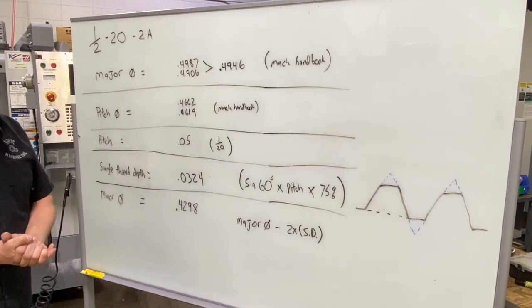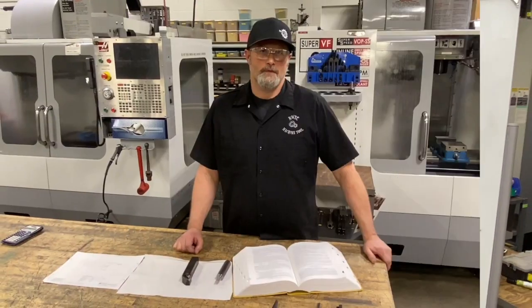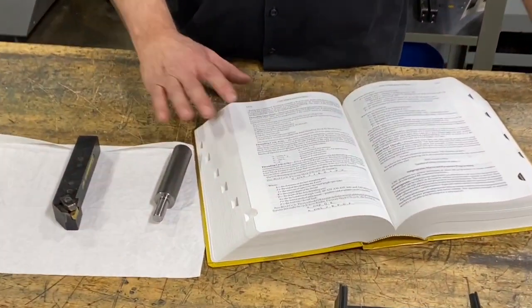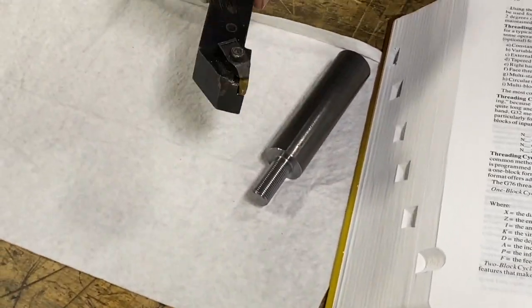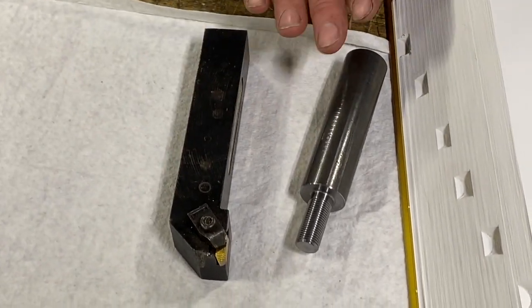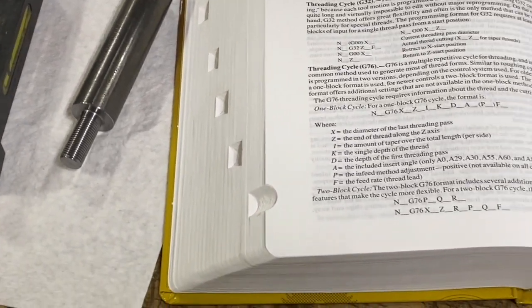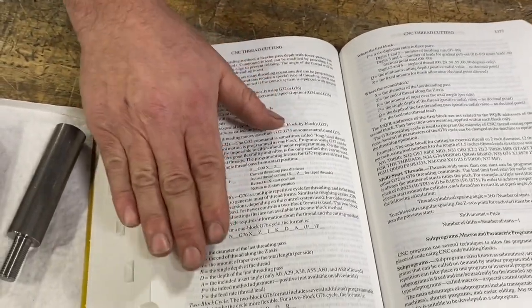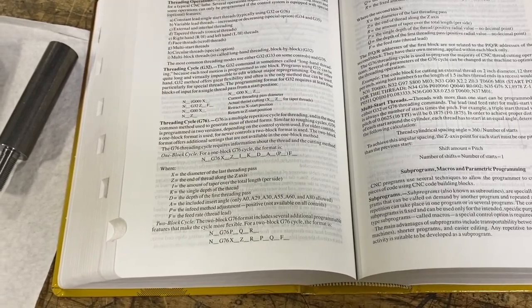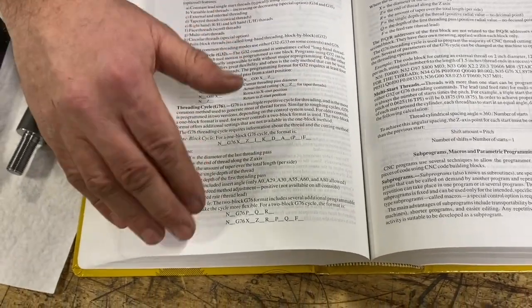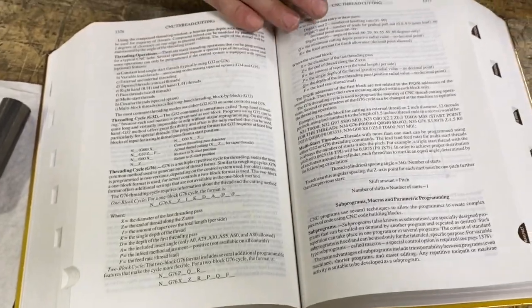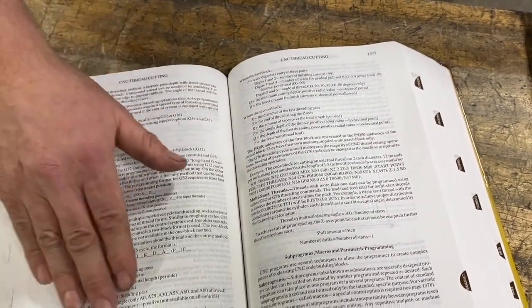Now we're going to look at the G-code we'll use for cutting the threads. Before we write our program, we'll look at the canned cycle — I'm going to use a multiple repetitive cycle with a single point threading tool, a standard industry 60-degree threading tool. Going back to our machinery's handbook, there's a lot of good information on G-code and canned cycles. On our particular machine we have a Fanuc 21i control, so for multiple repetitive threading we'll be using a G76 command. There are two different formats for the Fanuc control — for our machine it's a two-line canned cycle with two lines of G76 accompanied by letter addresses. The machinery's handbook gives a very good description of this.